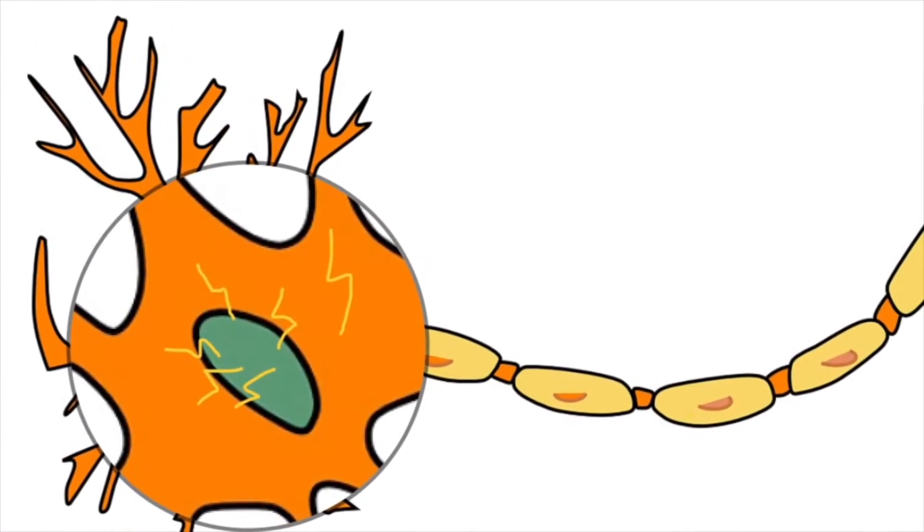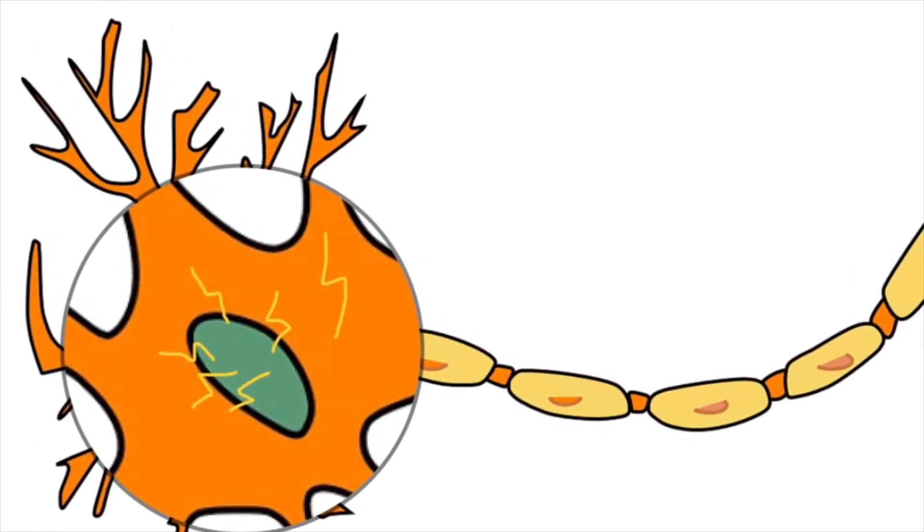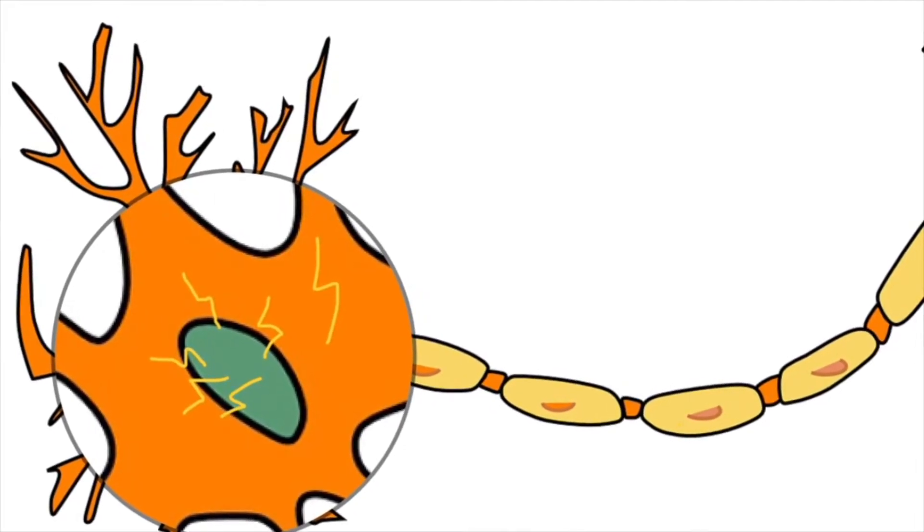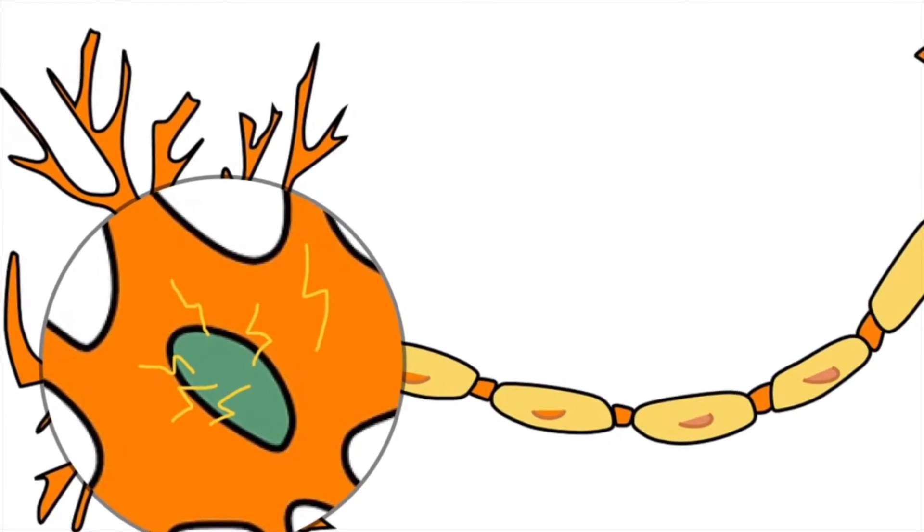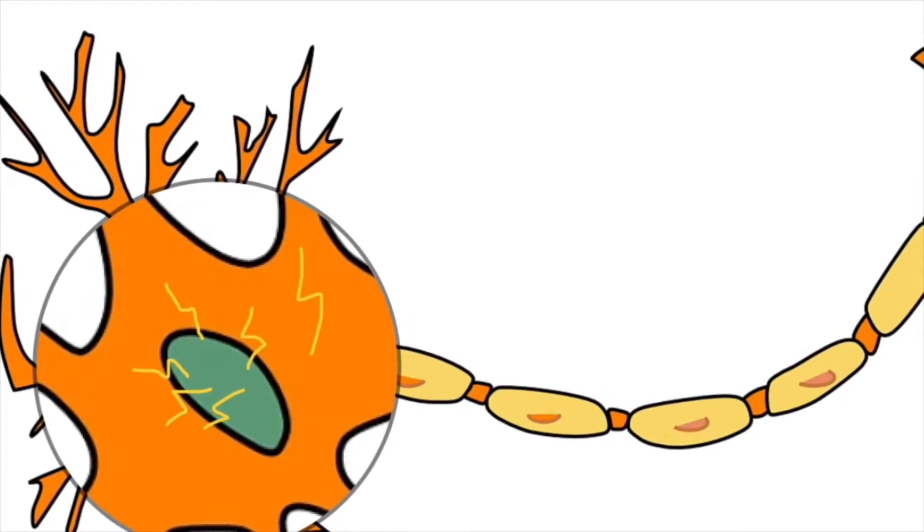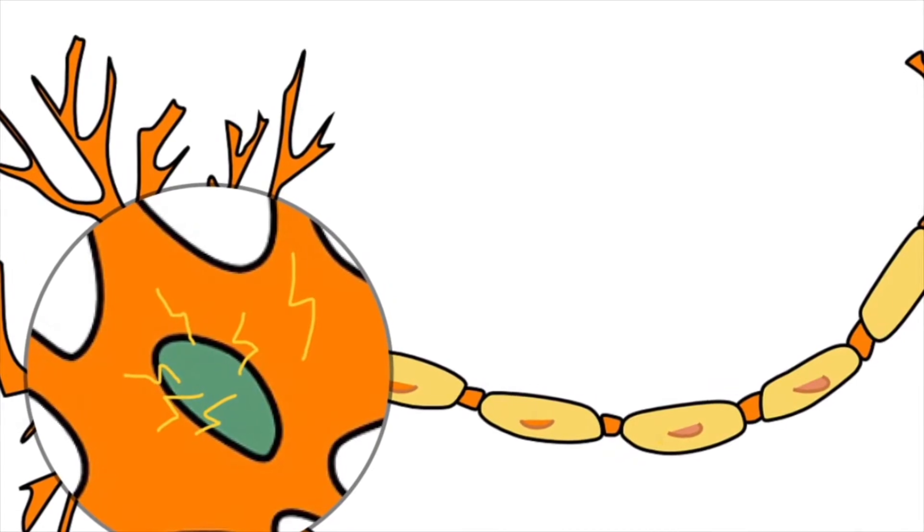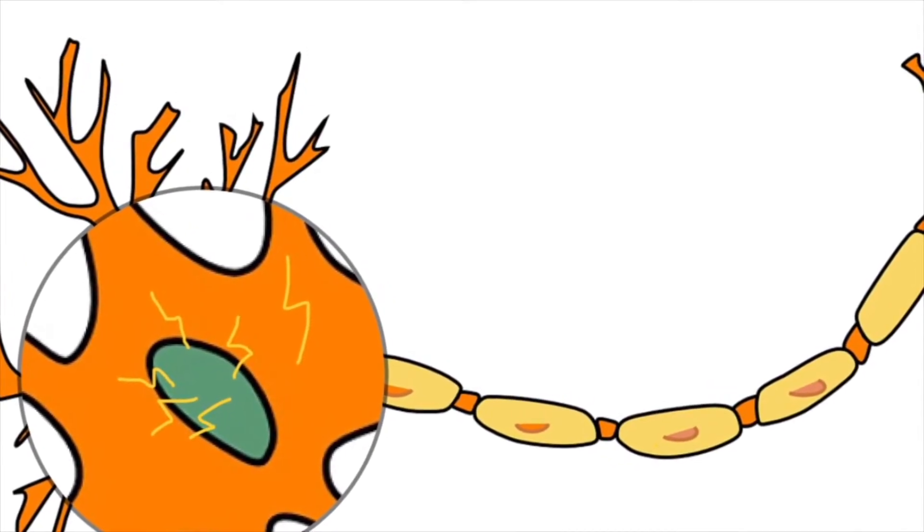We know that dendrites reach out to receive signals, but then where does the signal go? Once the signal is received, it then goes on to the soma. Here the soma integrates the information received from other dendrites and determines where the messages need to be transferred to.